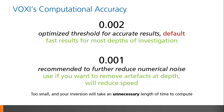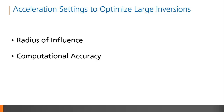Also, keep in mind that reducing the computational accuracy threshold will reduce the speed of inversion, and a threshold that is too small will take an inordinate amount of time to compute with no pragmatic benefit. This episode of our Inversion Best Practice web series focused on the acceleration settings used to optimize the inversion of large datasets.